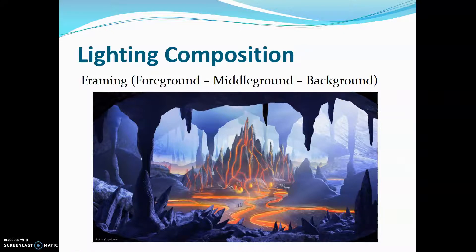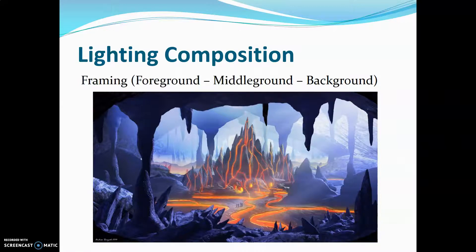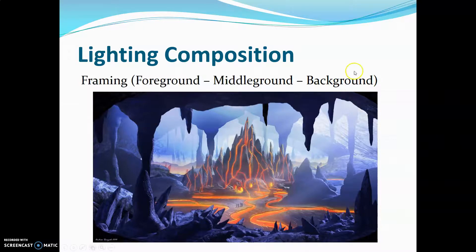When you are doing scenery or an environment, try to angle the camera so there is a foreground — like spiky bits in front — a middle ground where you put your subject or center of attention, and a background. You have layers so the audience can see depth in your composition. You need to plan and composite how the environment should look to get a nice result — foreground, middle ground, and background.